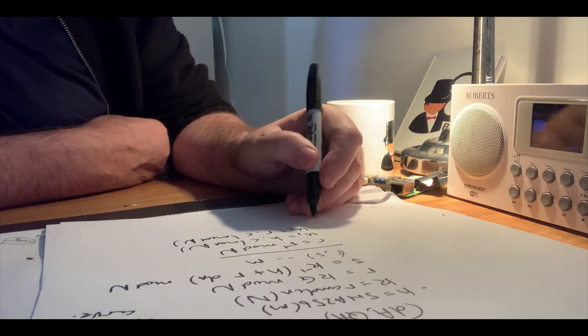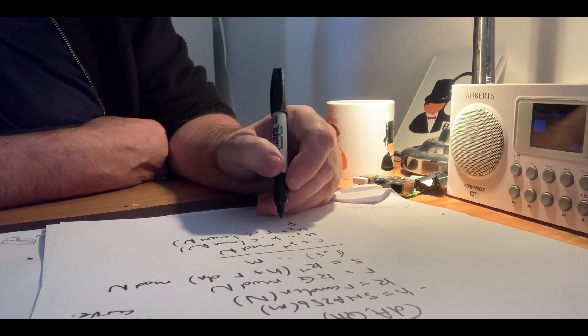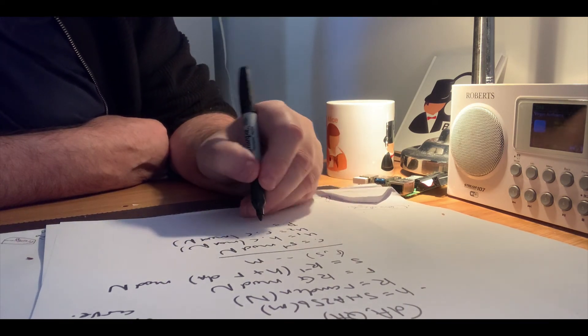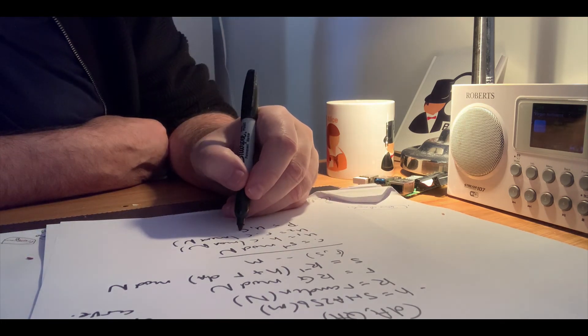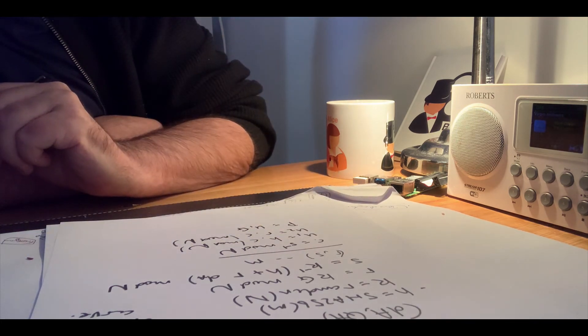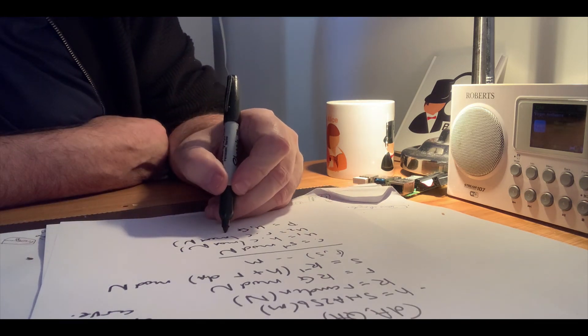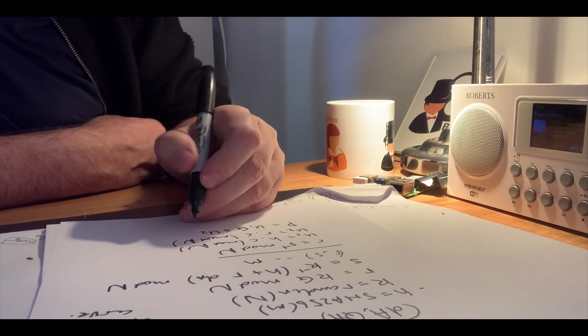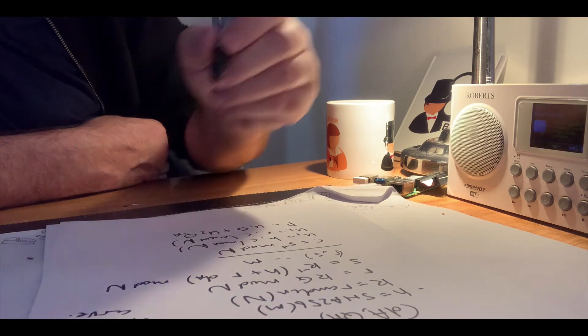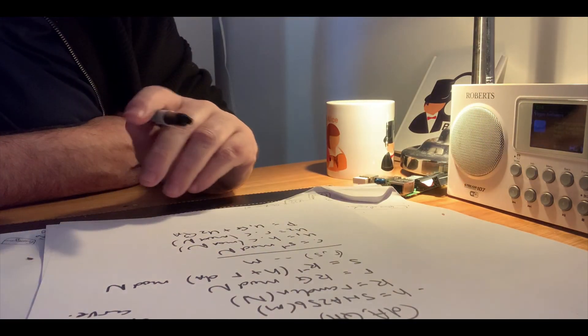So he does then a point addition, and he'll take u1, a scalar value, and multiply it by the base point, then add another point u2, and this time Alice's public key.